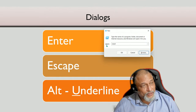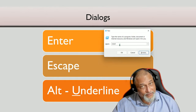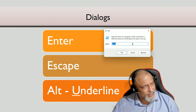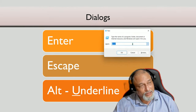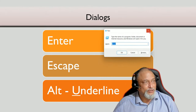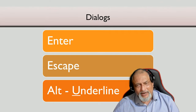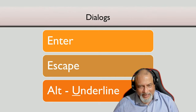By the way, there is a drop-down in this dialog. How do you open a drop-down? Many of us take the hand away from the keyboard, grab the mouse, and open the drop-down. There's another way: press Alt+Down Arrow. Alt+Down Arrow always opens the drop-down if your focus is on it. Alright, so that's about dialogs.